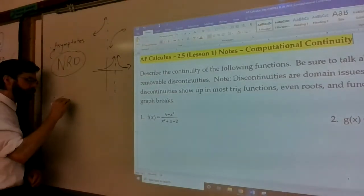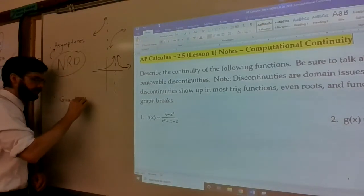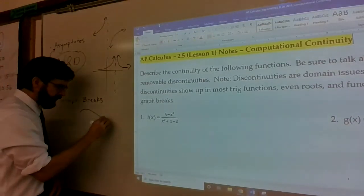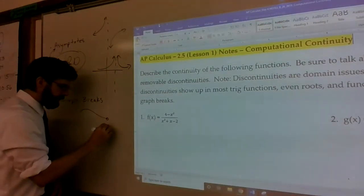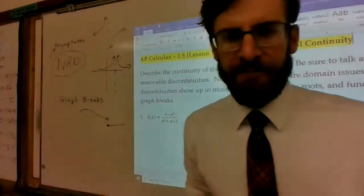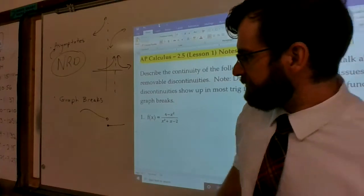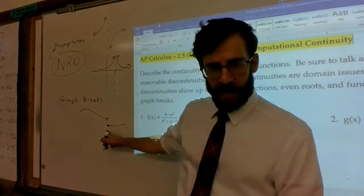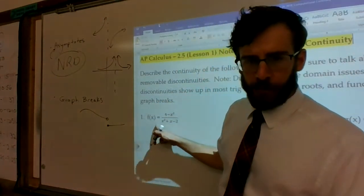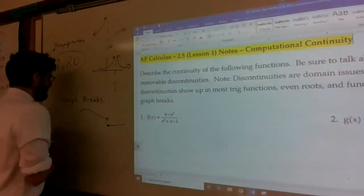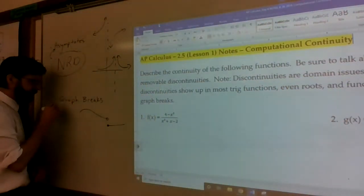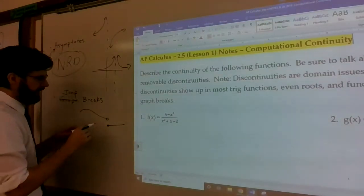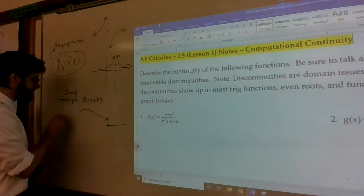If you had graph breaks — situations where you had a function on a very fluid path and then it just stops, jumps down, and then moves forward — that's what I'd call a jump break. That was also a non-removable discontinuity.